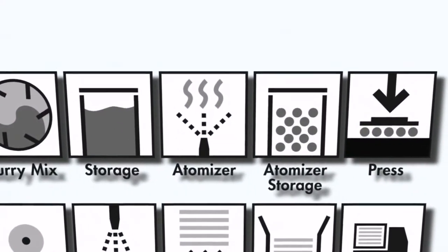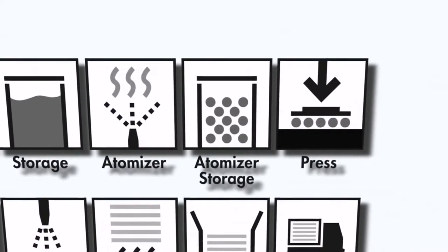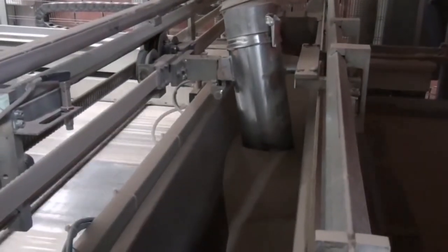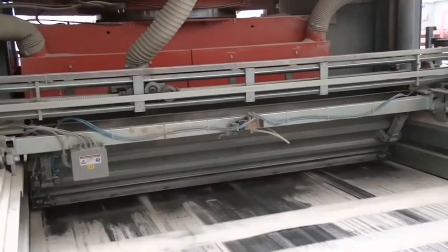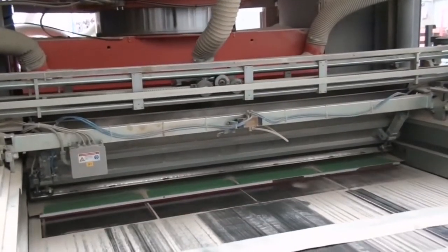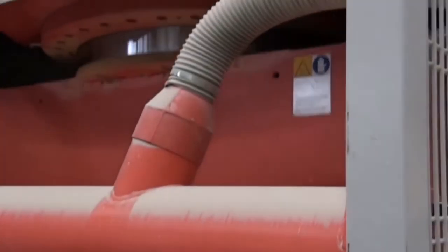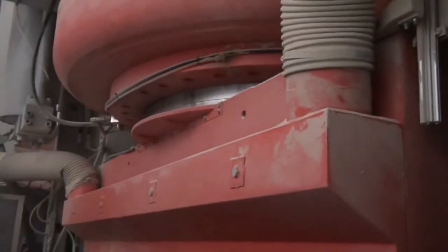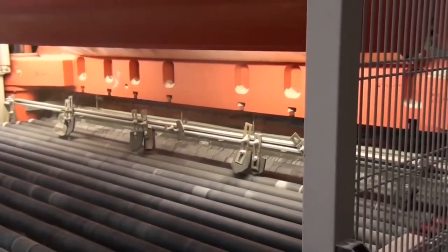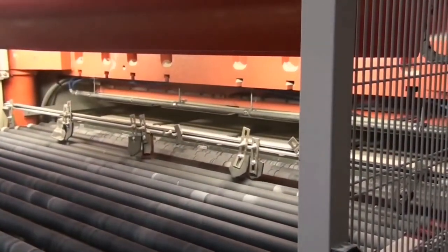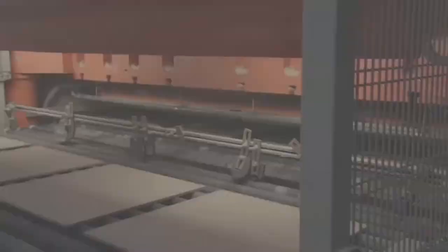The atomized powder is fed into a holding vat just behind the press. The vat releases measured quantities of atomized powder into a tray, which distributes the powder evenly into the mold. A force of 340 to 400 kilograms per square centimeter is applied using a large hydraulic press. The combination of high pressure and residual moisture turns the powder into a solid mass.